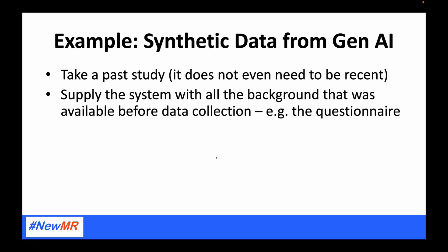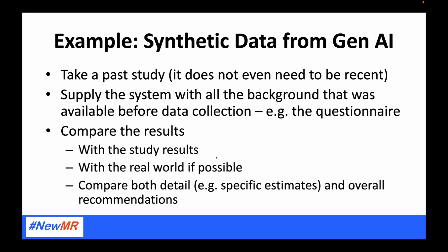For synthetic data from generative AI: take a past study — it doesn't even have to be a recent one — supply the system with all the background that was available before data collection, such as the questionnaire, then compare the results with the actual study results. If possible, compare it with the real world too, and compare not just the individual statistics but also the recommendations the system produces. As Andy and Signy showed earlier, you could possibly screen out the winners on a concept test without even trusting that the ordering within the winning group was correct, and I think that's a key part of thinking about this process.